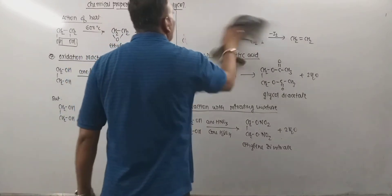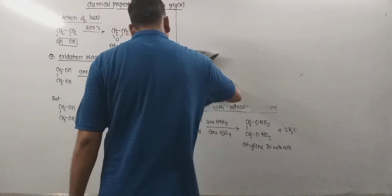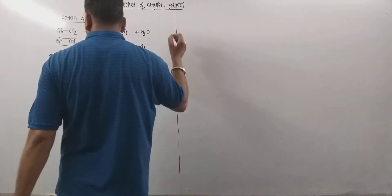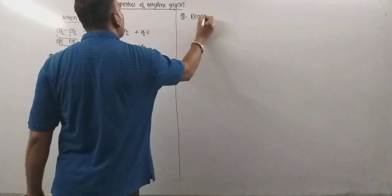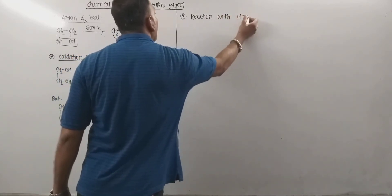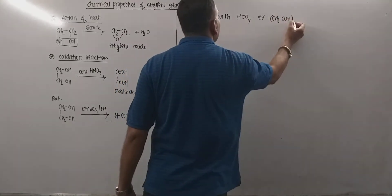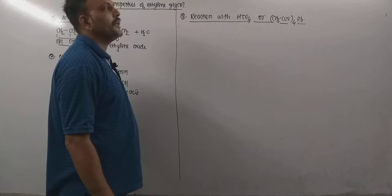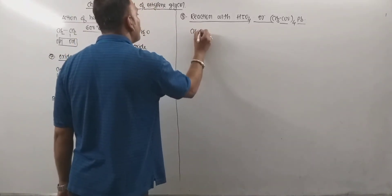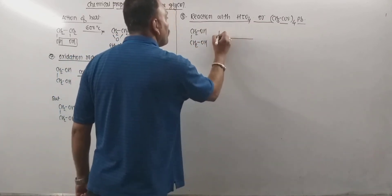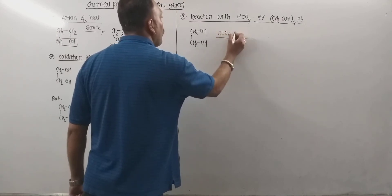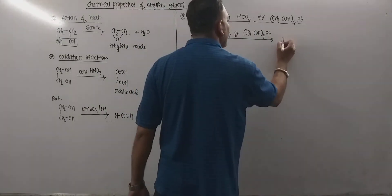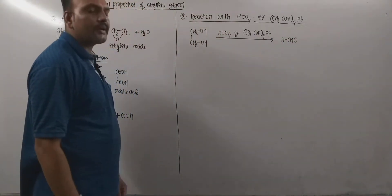An important reaction is how to convert ethylene glycol into formaldehyde. This can be done by reacting with HIO₄ or lead tetraacetate, (CH₃COO)₄Pb. When ethylene glycol is treated with either HIO₄ or lead tetraacetate, it gets converted into formaldehyde.